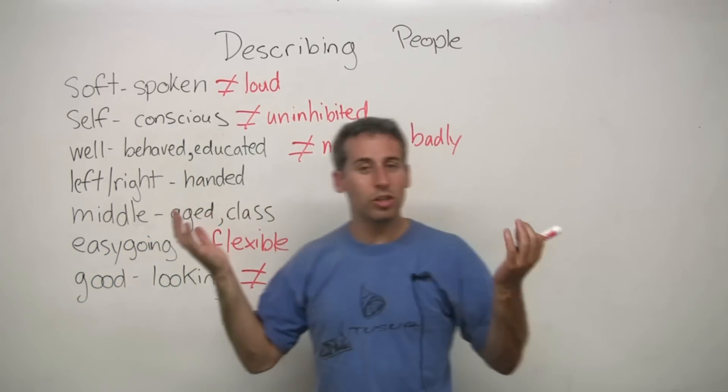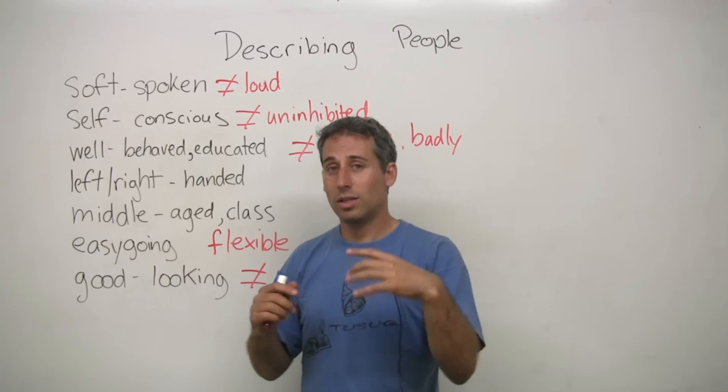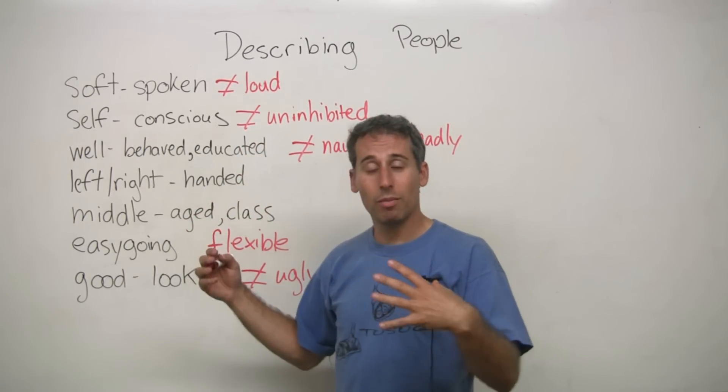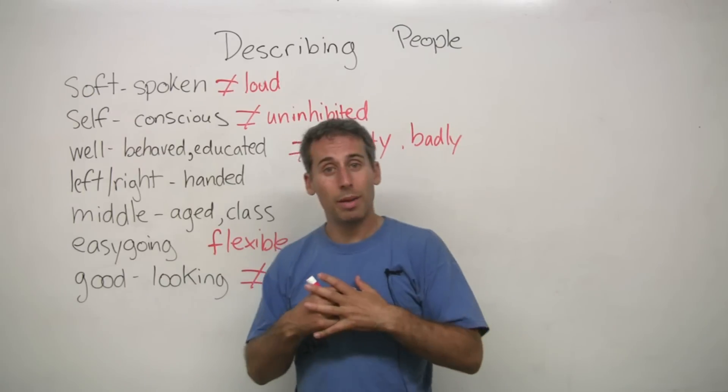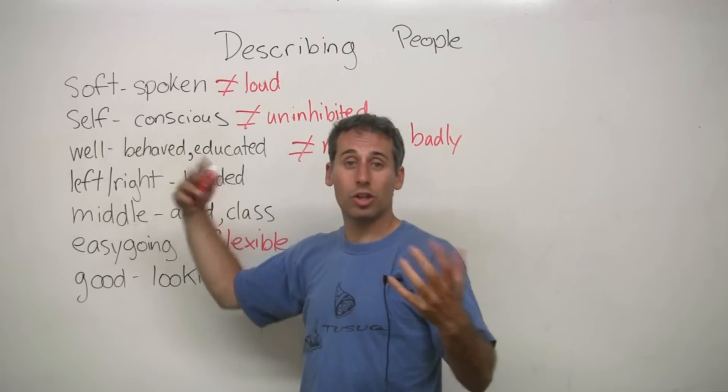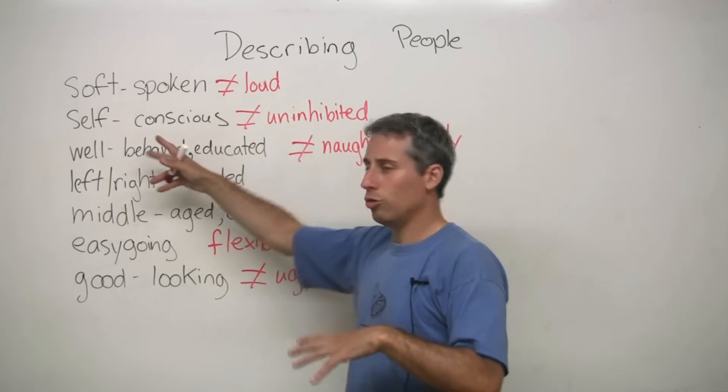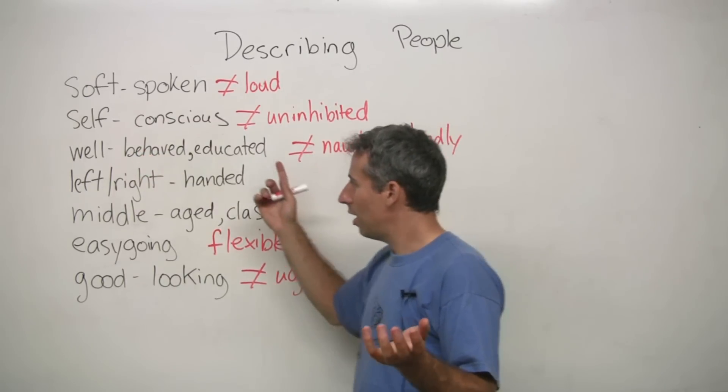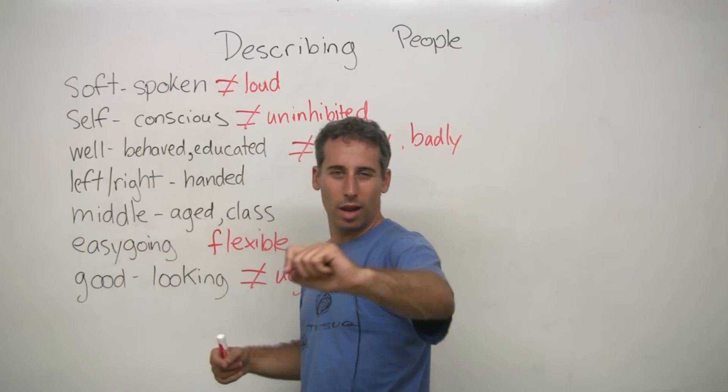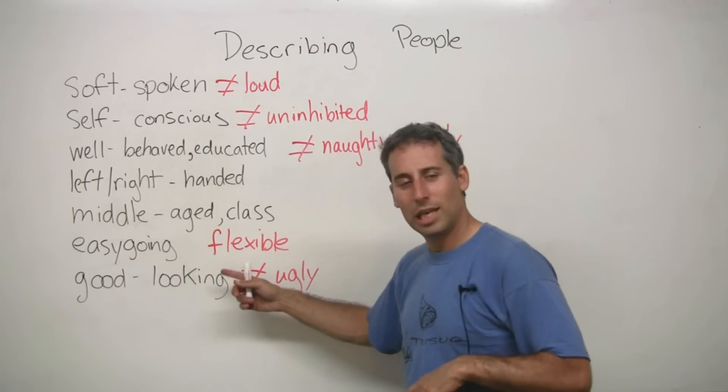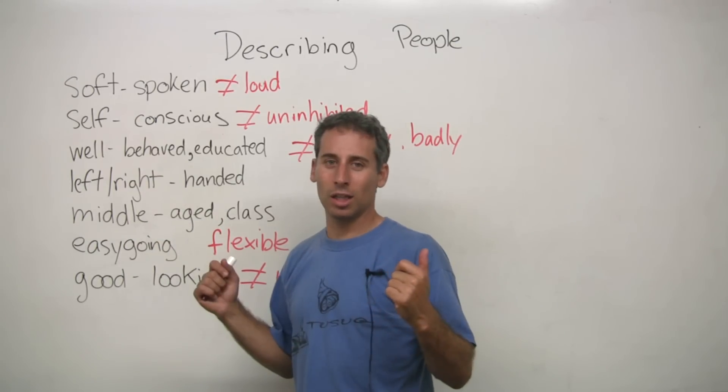Okay. So there's just a few words that you can use, and what I would suggest is I want you to look at these words, think about them, and think about yourself and maybe other people that you know, and use these words to describe maybe yourself or other people. So are you soft-spoken or are you loud? Are you self-conscious? Are you uninhibited? Is your little brother well-behaved or is he naughty? Are you left-handed or right-handed? Are you easy-going? Are you middle-aged or are you very young? Are you good looking or are you ugly?